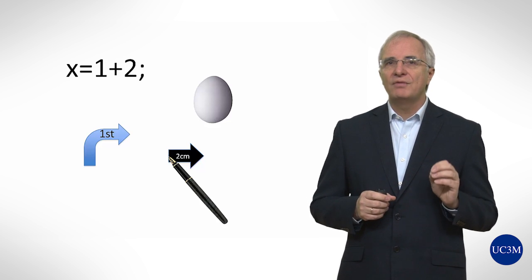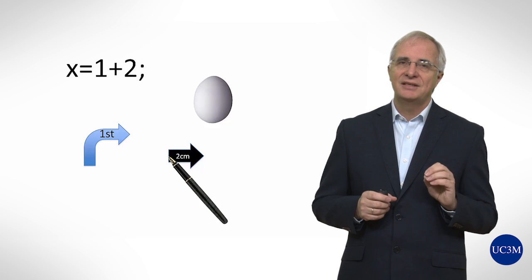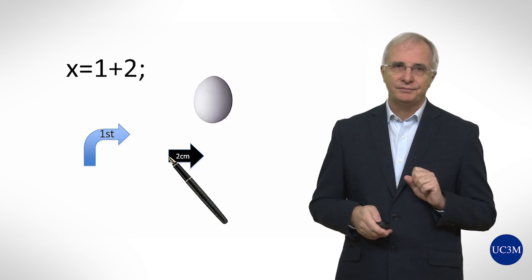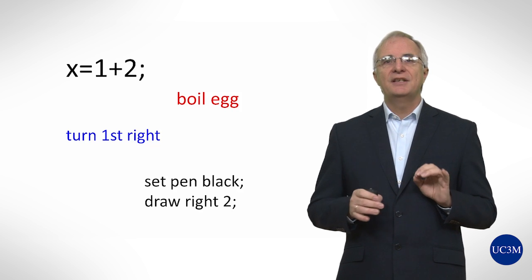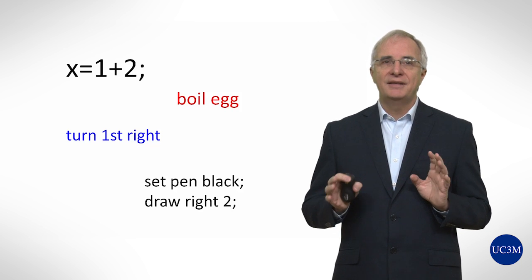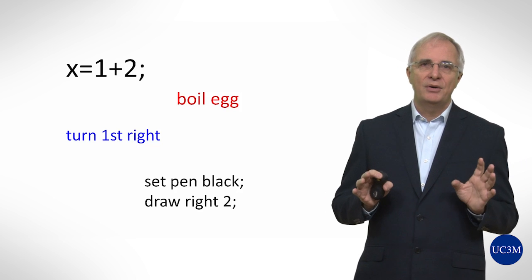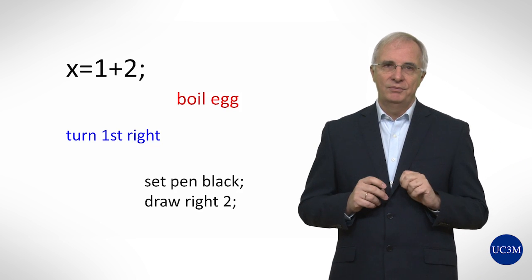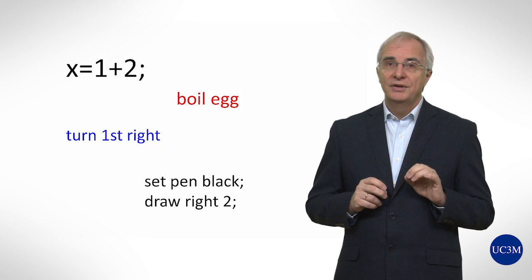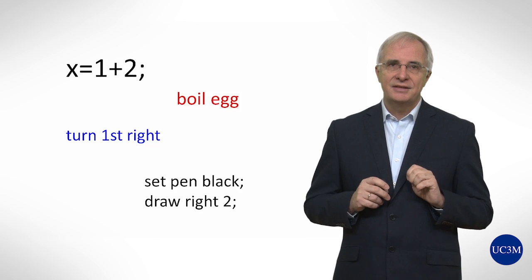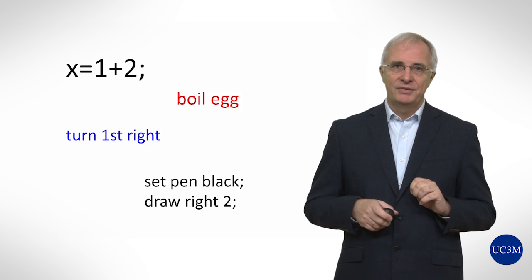So far we have only seen a very basic set of instructions; we will enrich this set in coming lessons. These basic instructions are normally text. There might be visual representations occasionally, but in general they are written in textual form. What we have to do is to learn these instructions in text and use them well in order to write correct programs.